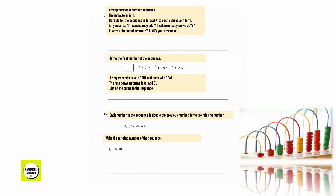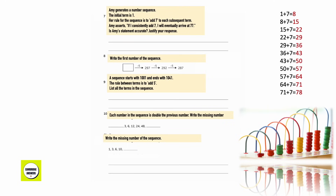Question number 7. Amy makes a number sequence. The first term of her sequence is 1 and her term-to-term rule is add 7. Amy says if she keeps adding 7, she will reach 77. Is Amy correct? When we add 1 and 7 we get 8. If we keep adding 7, we will reach 78 and not 77. So no — all terms are one more than a multiple of 7.